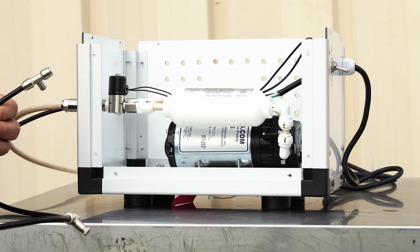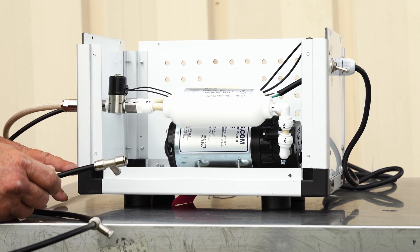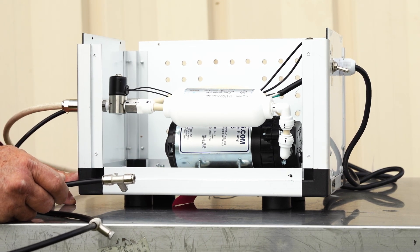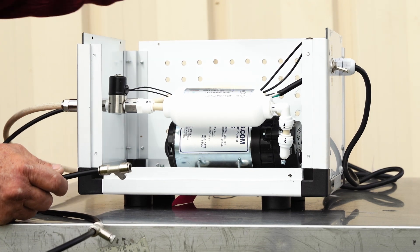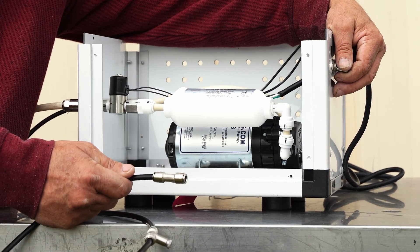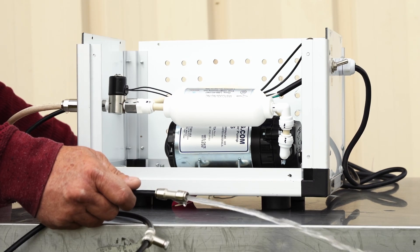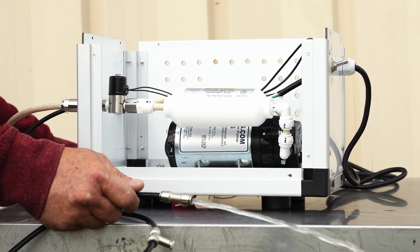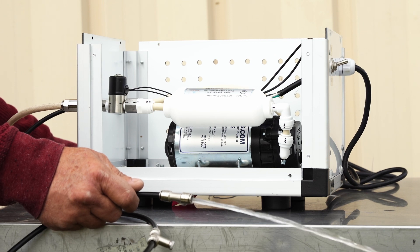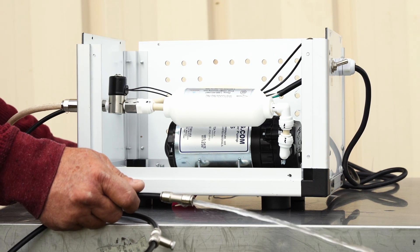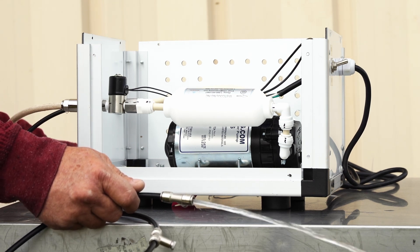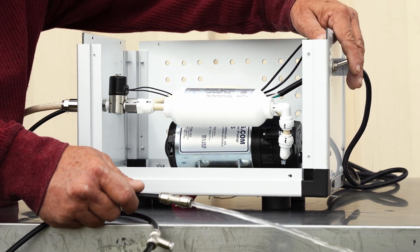And what you'll do is turn it on and run all of the air out of your misting line. Turn your pump on. Make sure your water's on. When you get a good stream, turn your pump off.